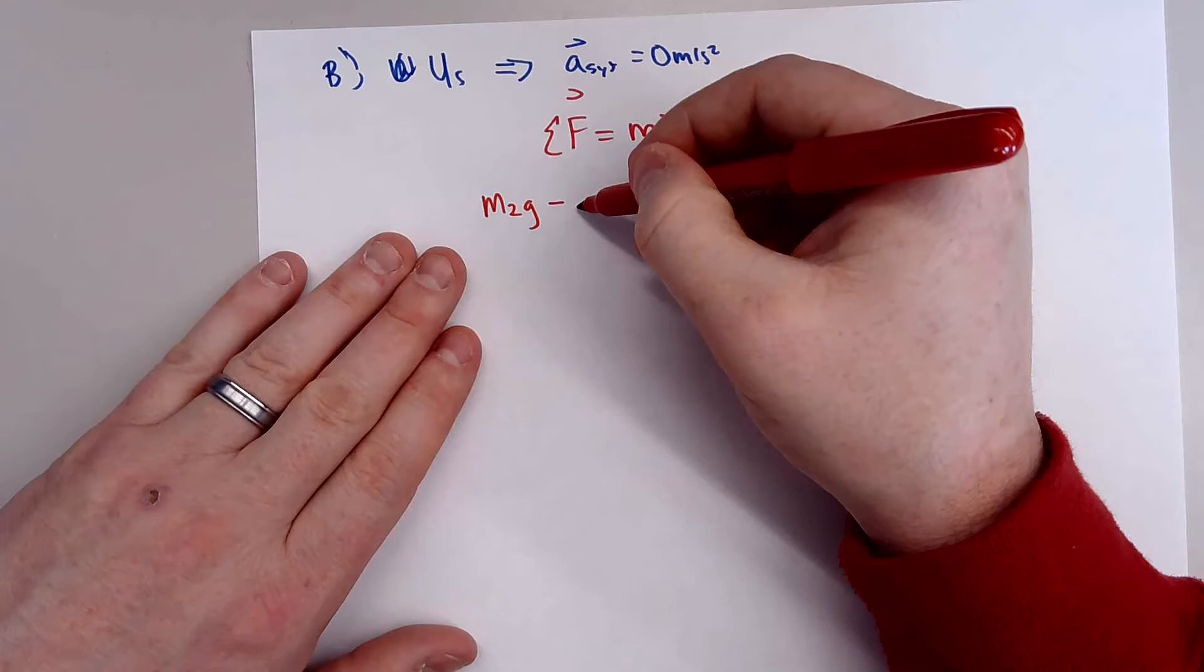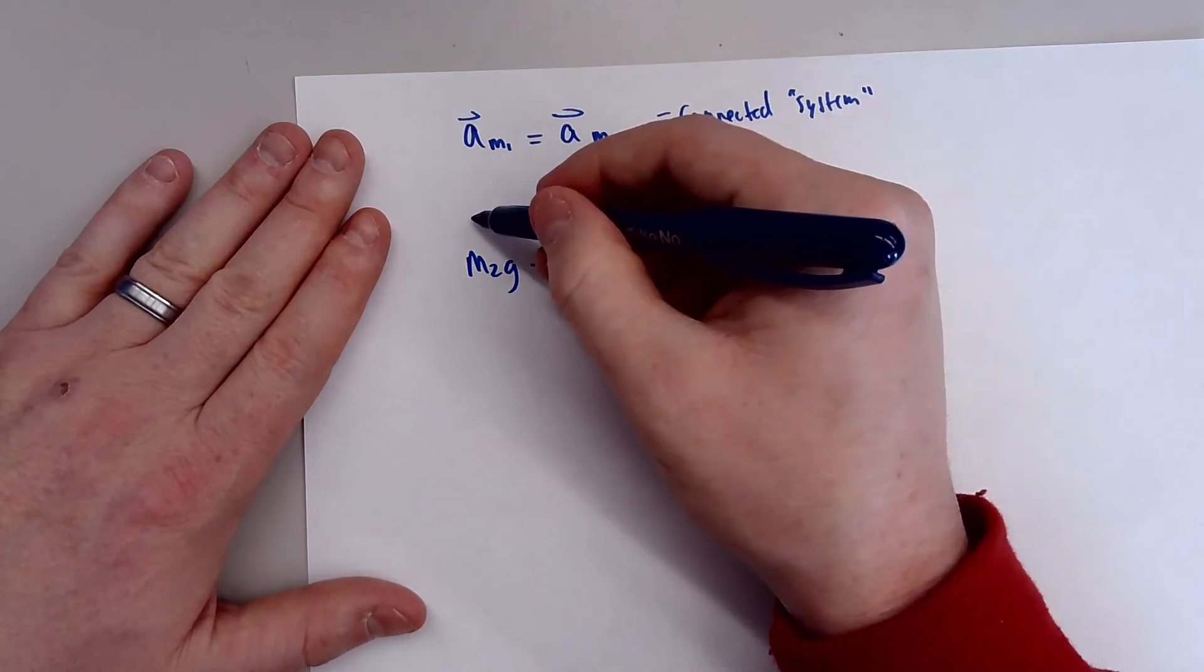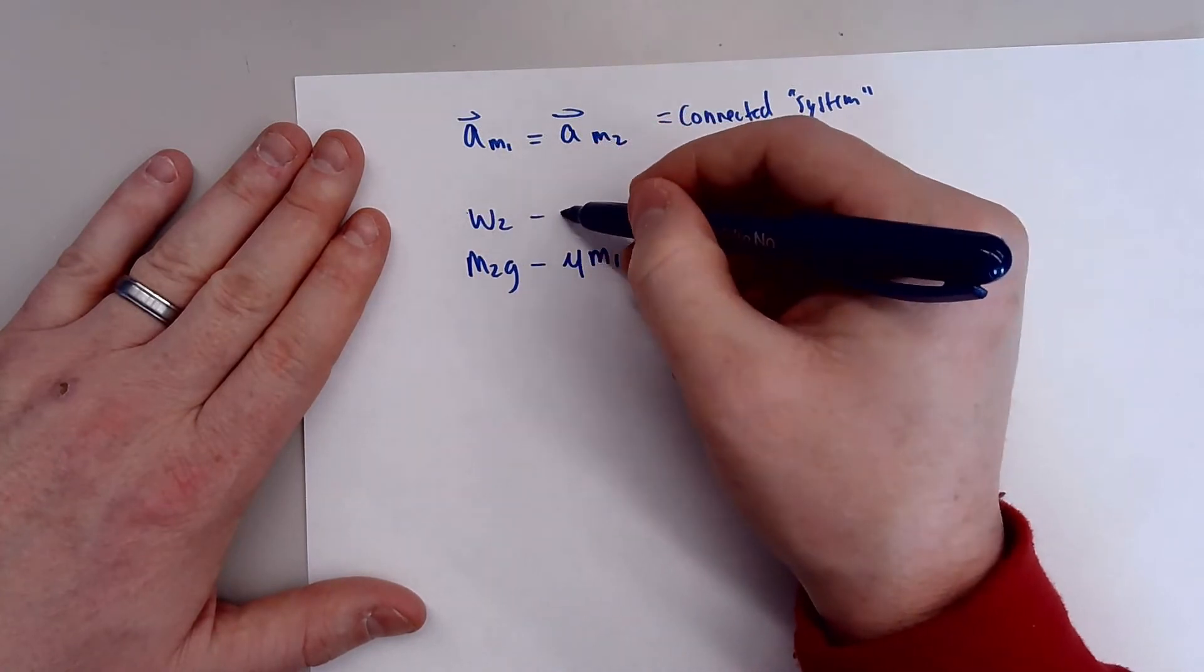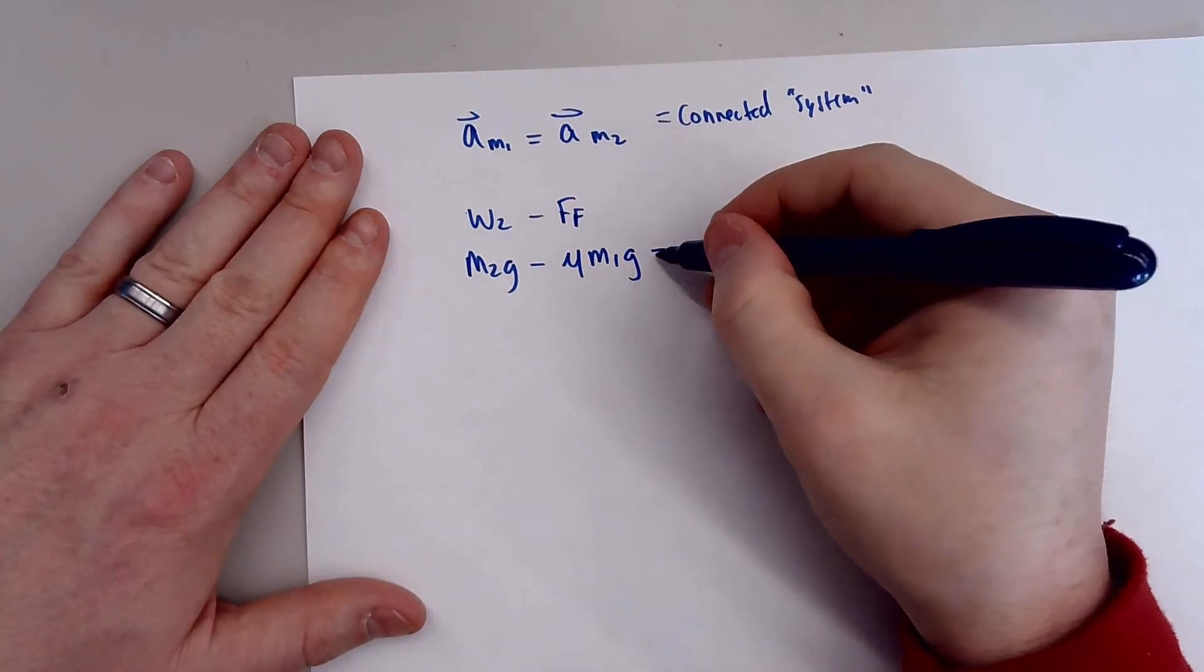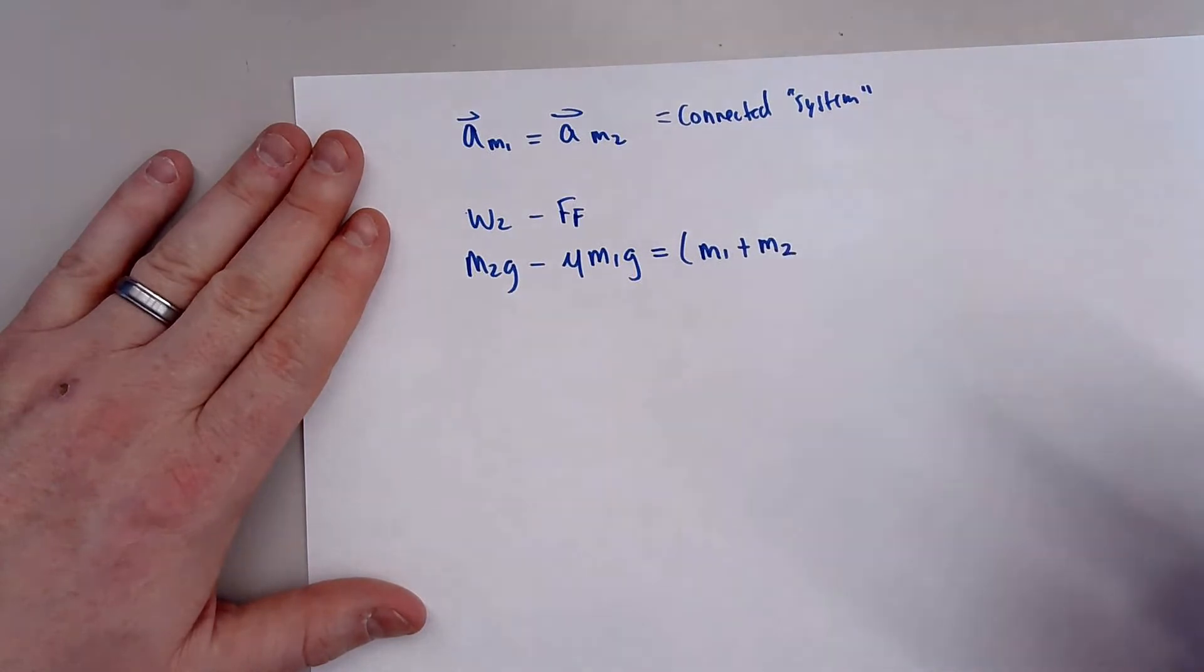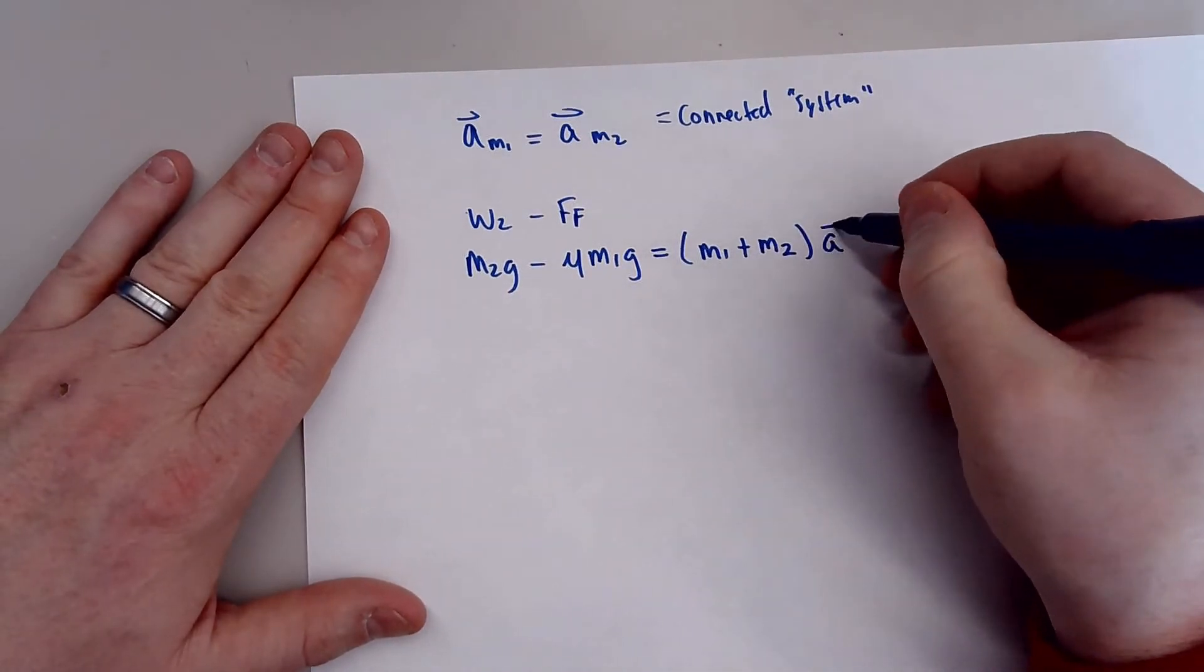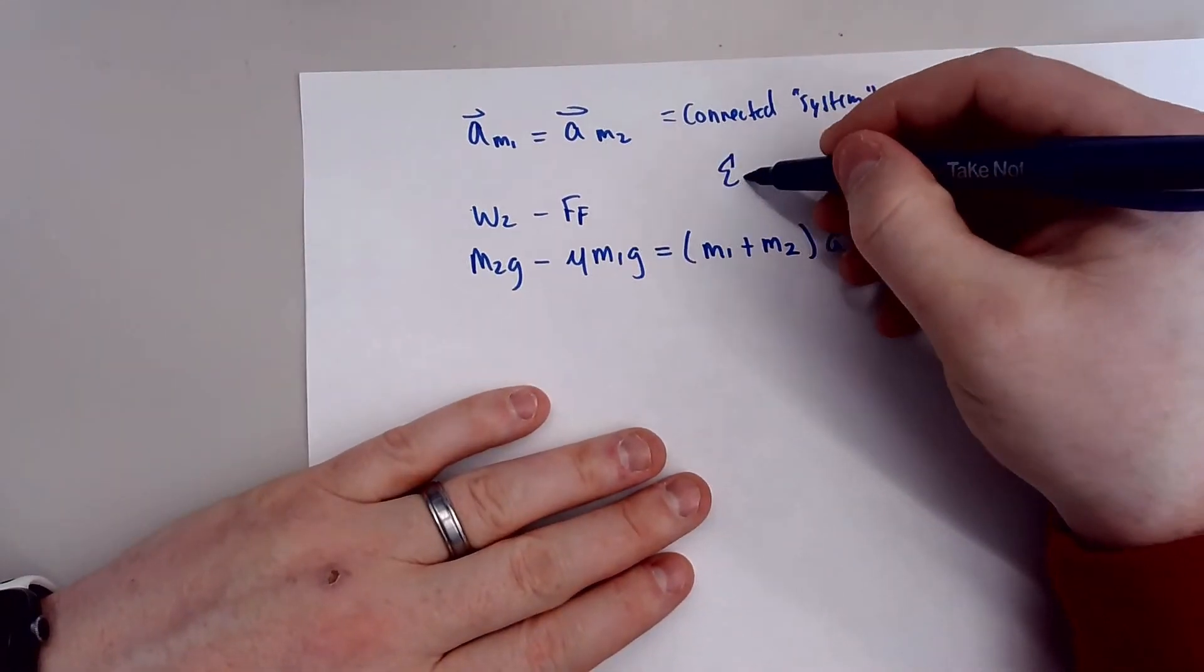Okay. So we're going to do pretty much the same thing to find the acceleration. And remember, there's only two forces acting on this. And that was M2 times gravity minus the force of friction, which we said was mu M1g. So this is the weight of two minus the force of friction. And the tensions will cancel out equals M1 plus M2 all over A. All right. So this is just Newton's second law.